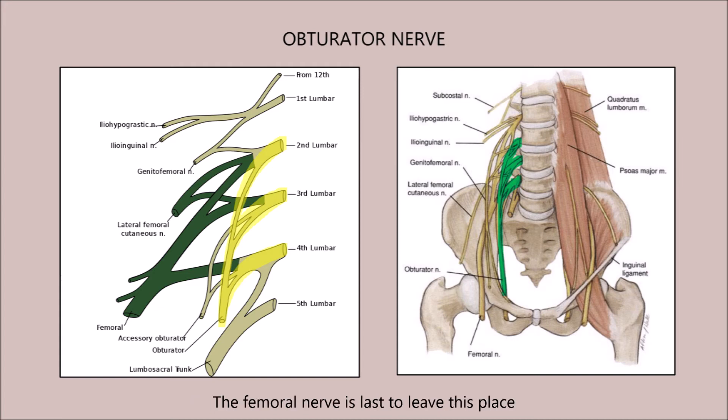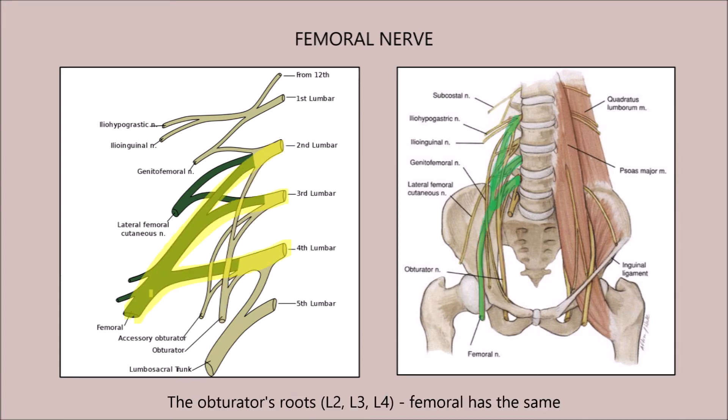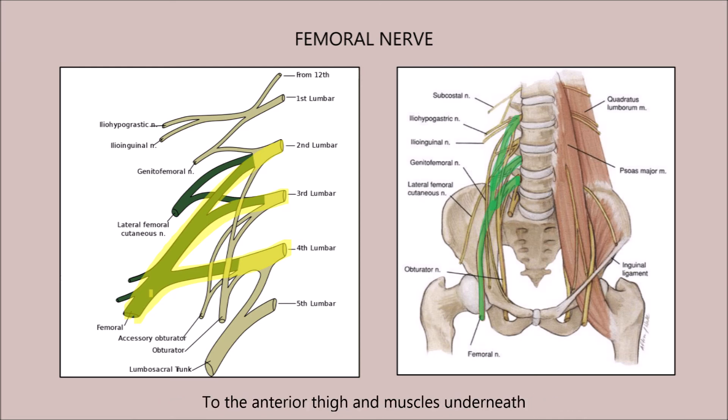The femoral nerve is last to leave this place; the obturator's roots, femoral has the same. It travels with the artery, but outside the sheath, to the anterior thigh and muscles underneath.